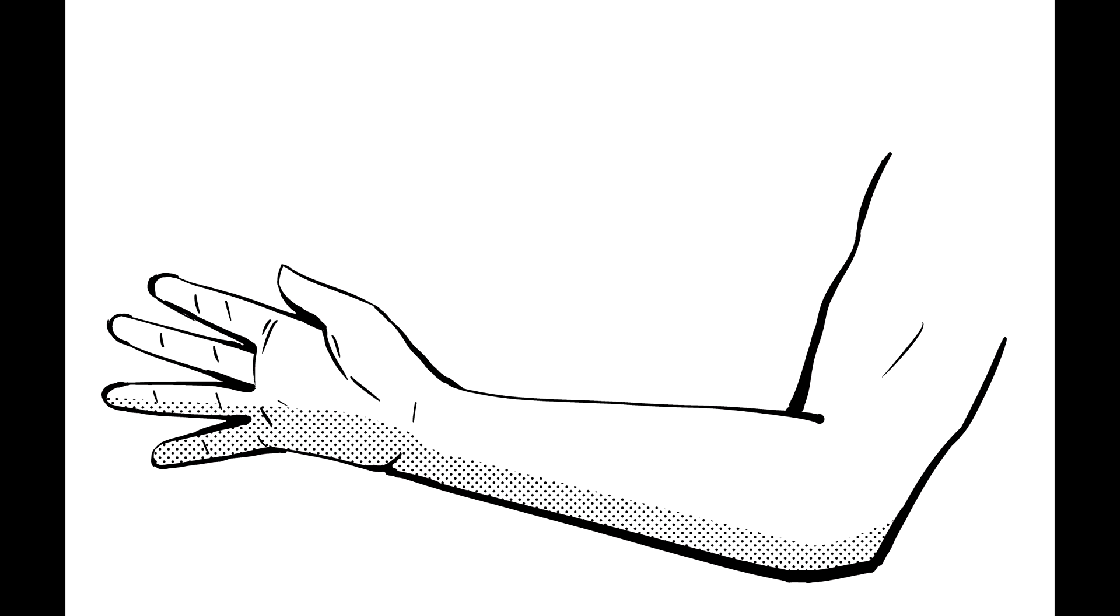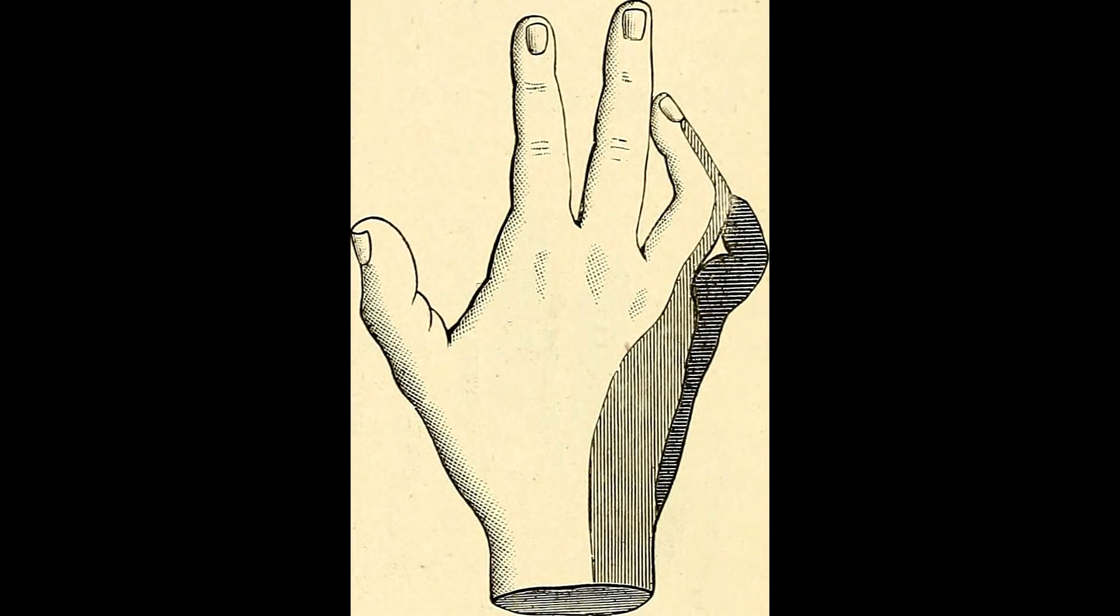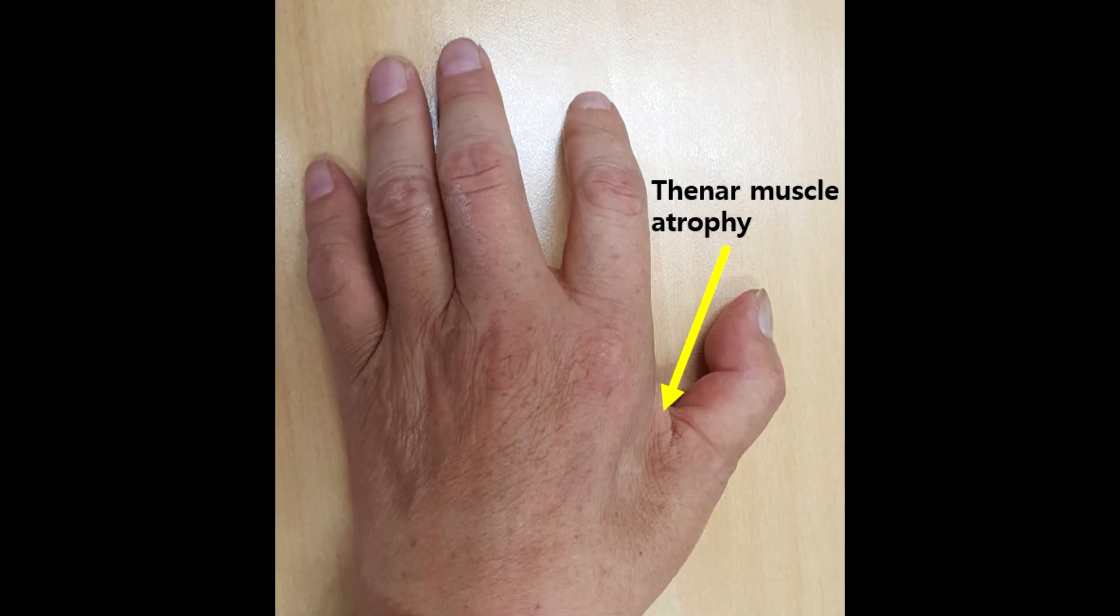When ulnar nerve is compressed at the elbow, it is called cubital tunnel syndrome. Numbness and tingling in the fourth and fifth fingers are common symptoms. Muscle wasting in the hand can occur.